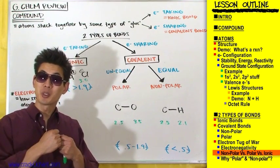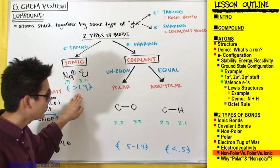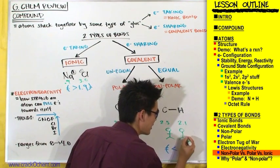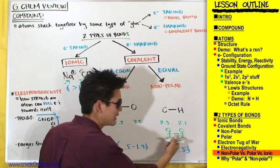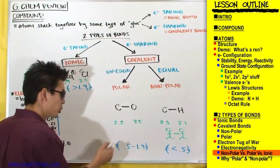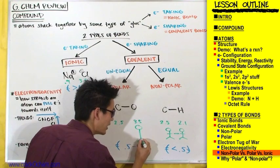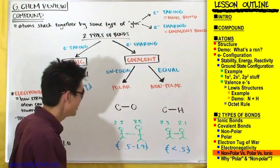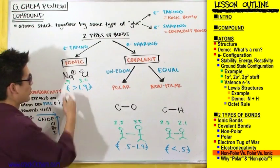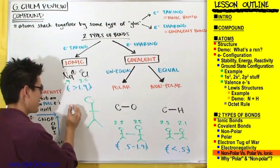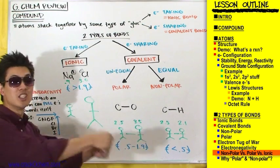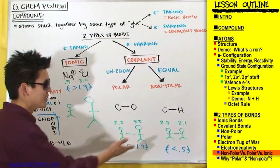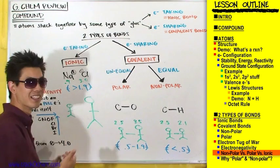Think of these three bond types as a tug-of-war. A non-polar covalent bond is two people of the same size and strength pulling on a rope — the electrons aren't going anywhere. A polar covalent bond is a slightly bigger person versus a slightly smaller one, so the bigger person pulls the electrons closer. An ionic bond is a huge person versus a tiny person — the huge person just yanks the rope away. These are just different strengths competing for electrons.